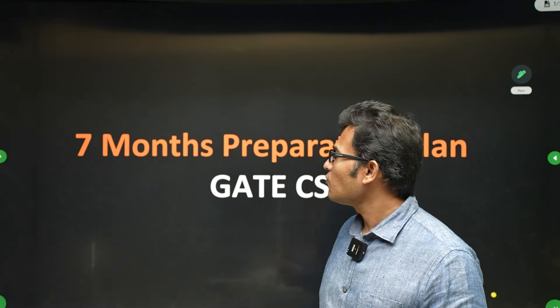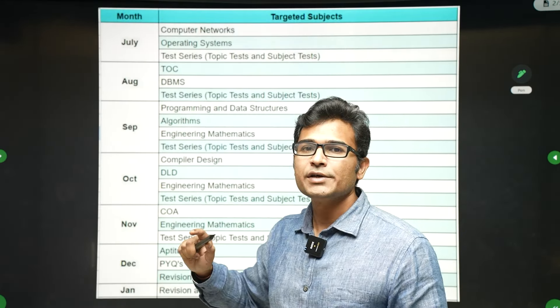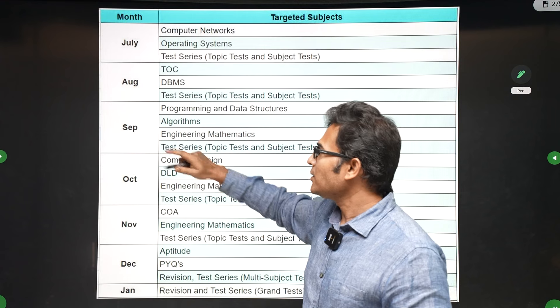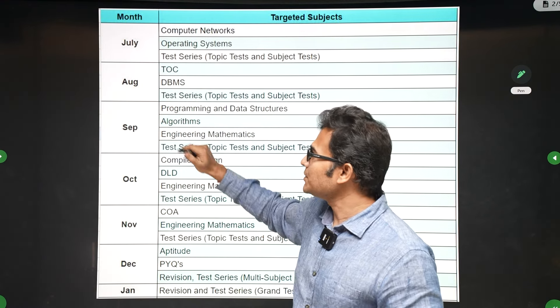First thing is, in the month of July, you complete Computer Networks and Operating Systems and do the test series for those two subjects. Then in the month of August, you complete TOC and DBMS and do the test series for those subjects.